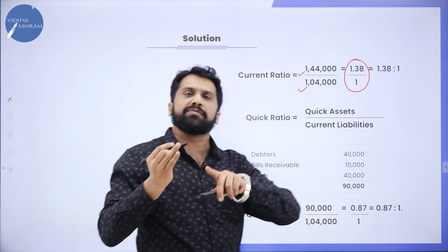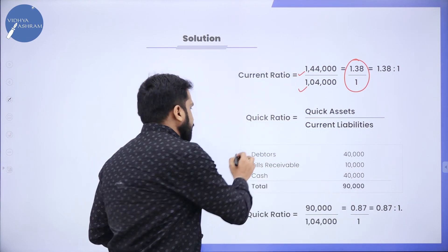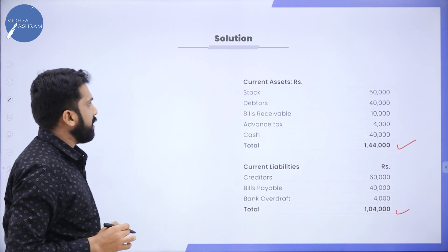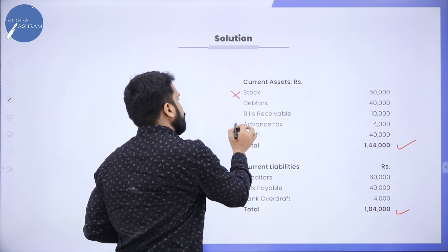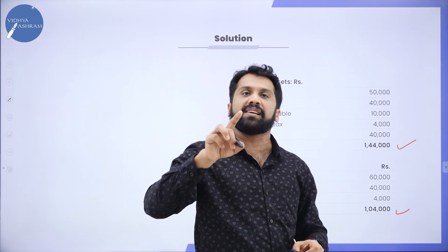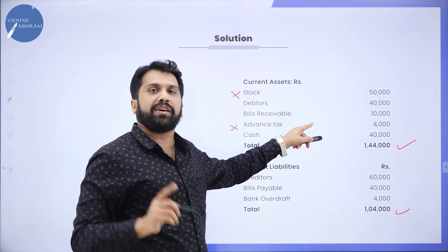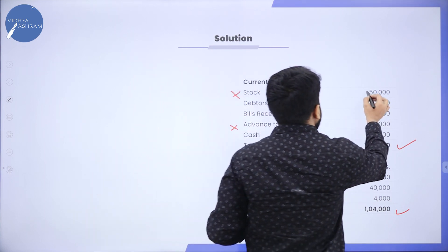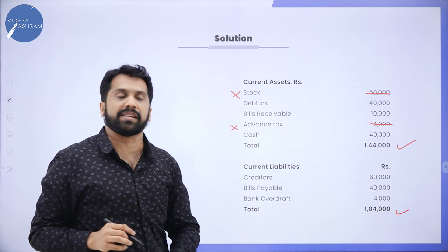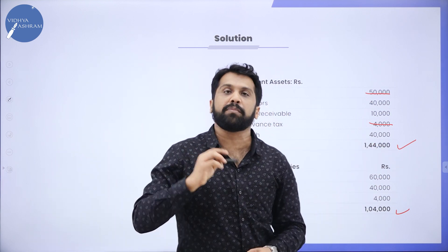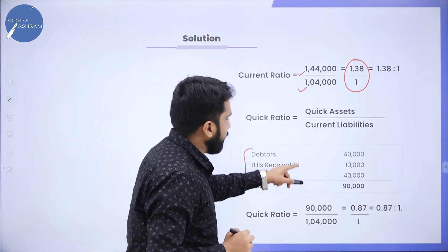Now for Quick Ratio. What is the difference between Current Ratio and Quick Ratio? In the Current Assets, we will not consider Stock, and we will not consider anything which is prepaid or advanced. Out of 1,04,000, if we cancel 50,000 and 4,000 — that is 54,000 — then 1,04,000 minus 54,000 gives 90,000. Your total Quick Asset is 90,000.